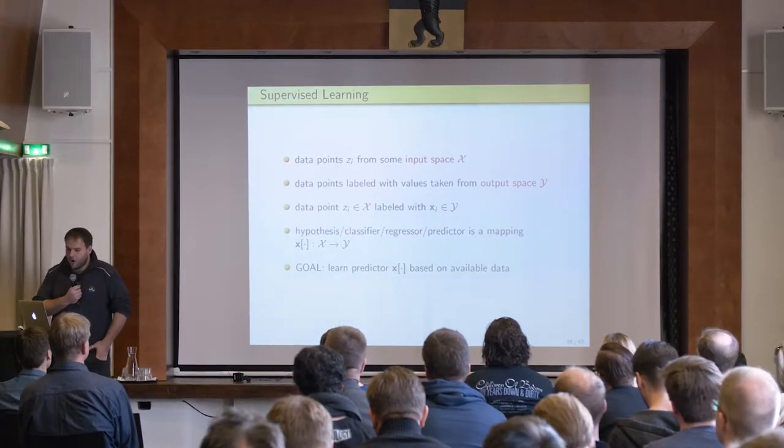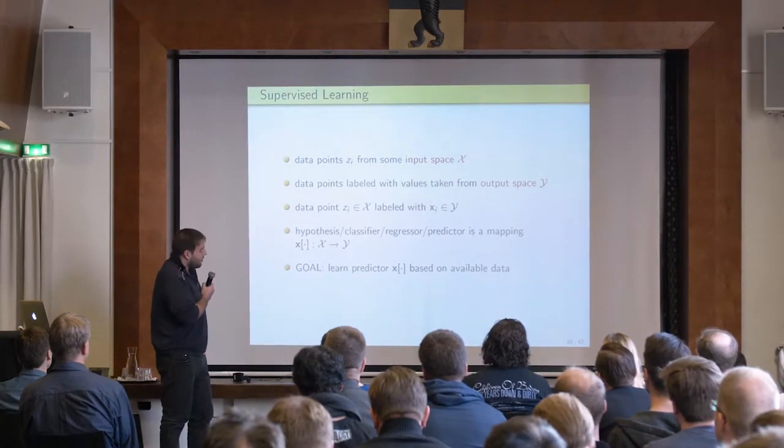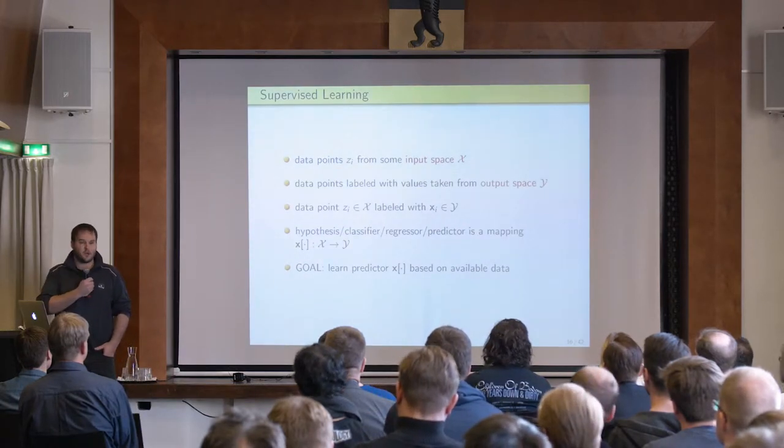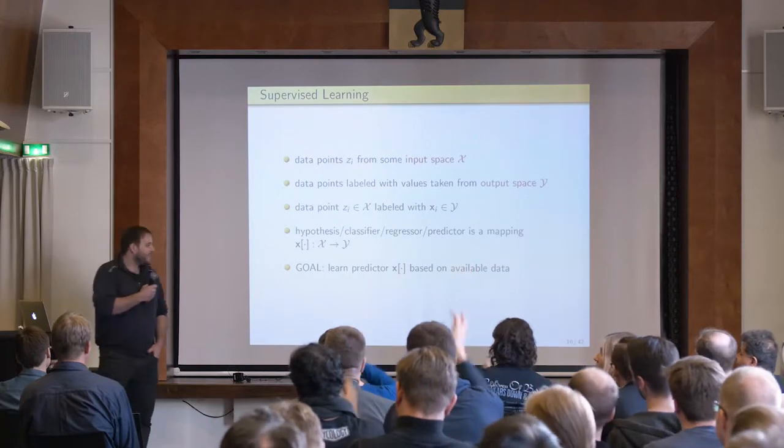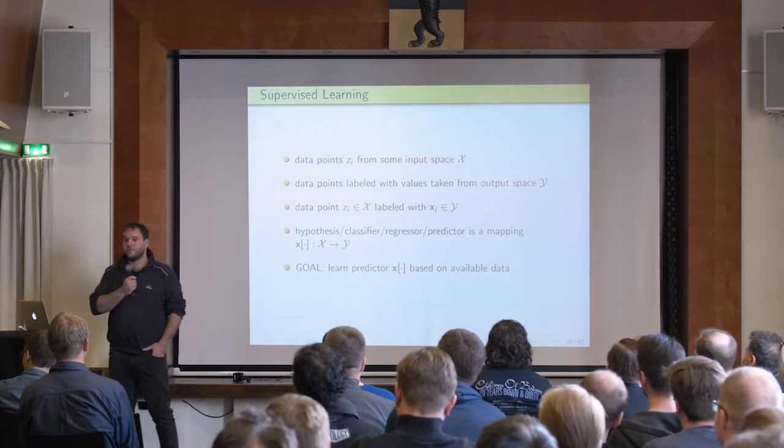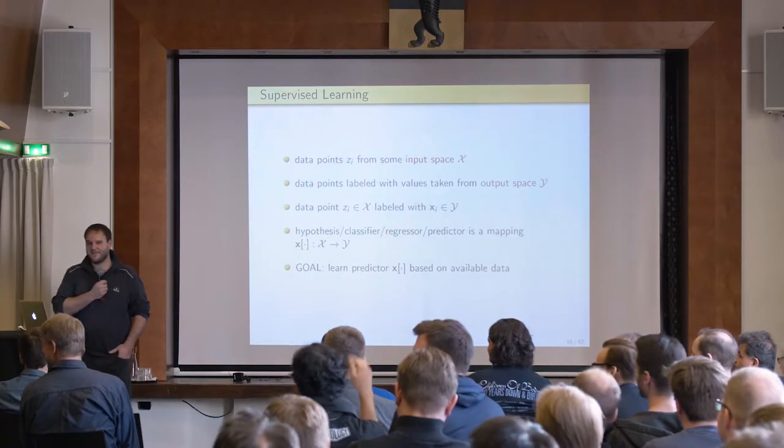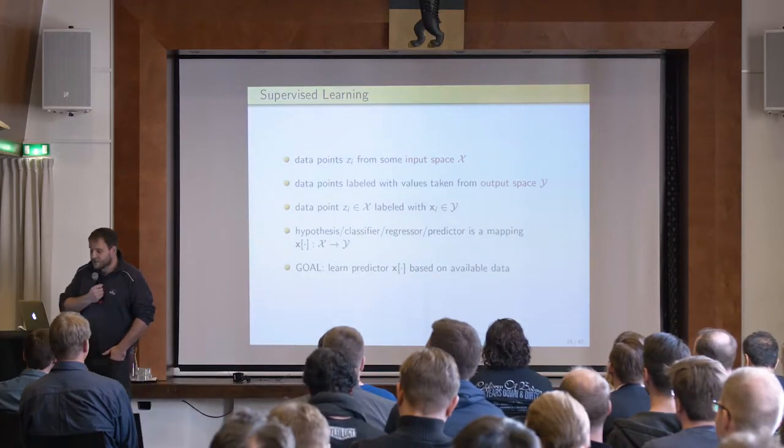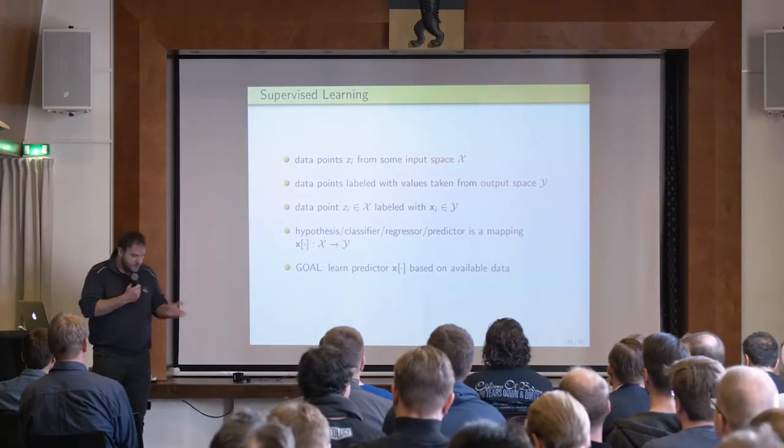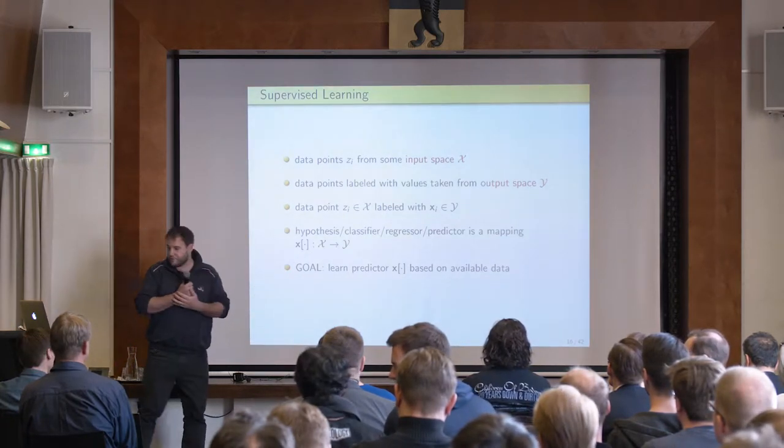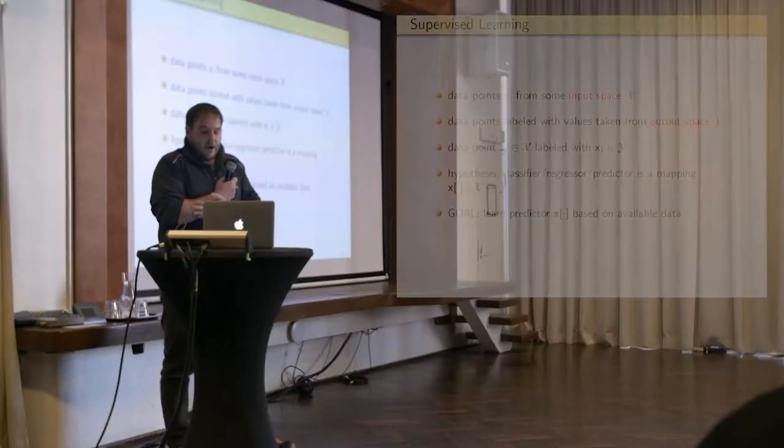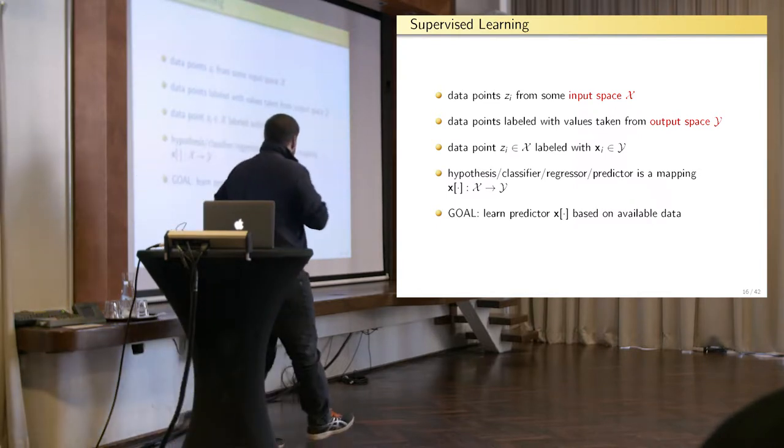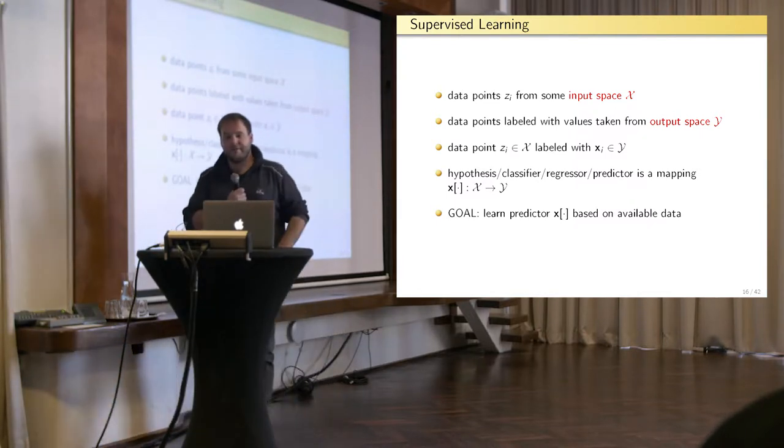So you model large systems of random variables using a network representing the correlation or conditional correlations between the individual random variables. And using the network structure allows for efficient message passing algorithms for such models. From a more pragmatic point of view, we consider also network models for supervised machine learning. So in supervised machine learning, a large part of machine learning is about supervised learning. And in supervised learning, we're interested in learning a map. Nothing else than learning a map from an input space to an output space.